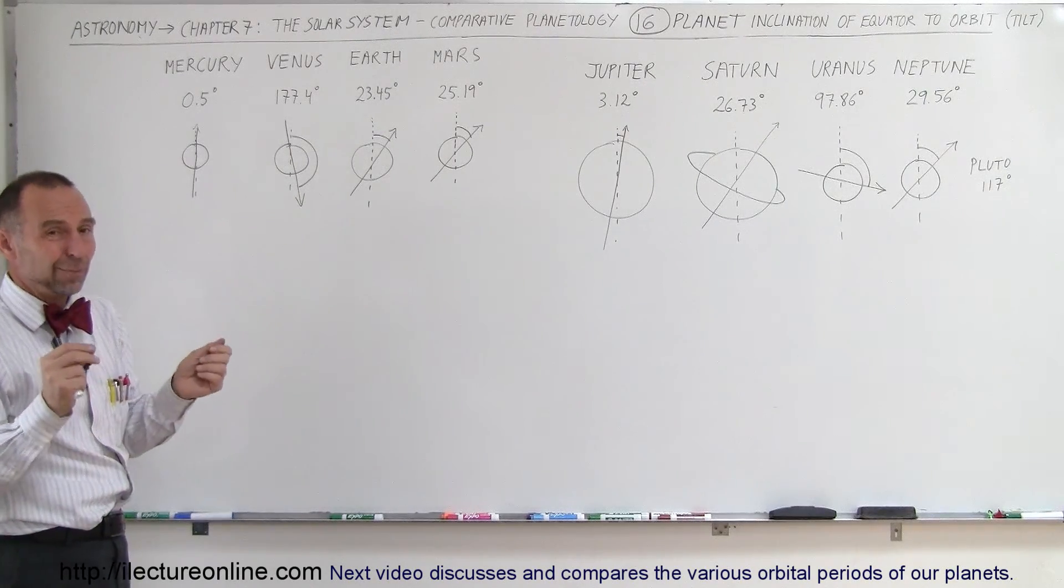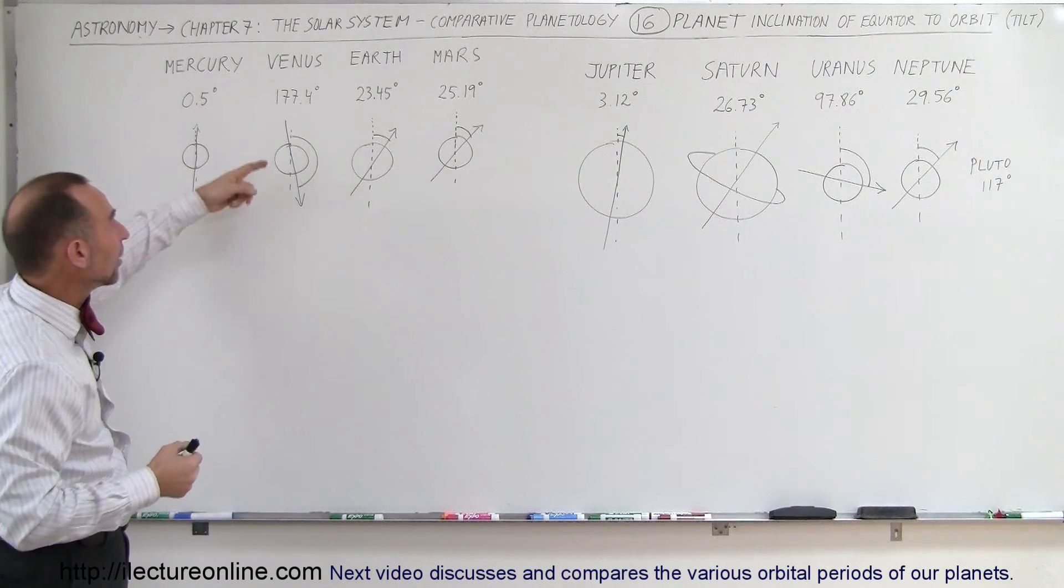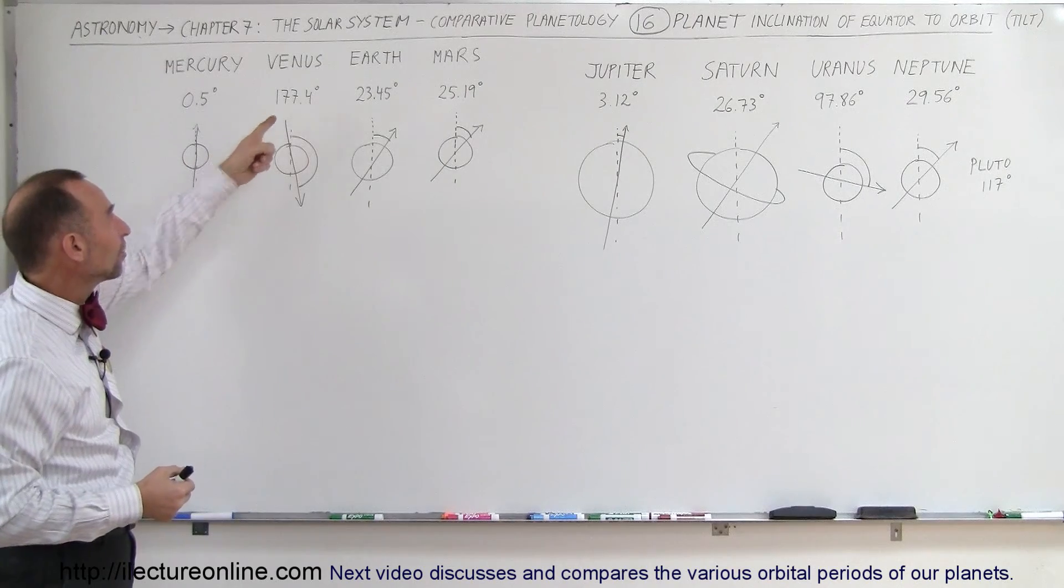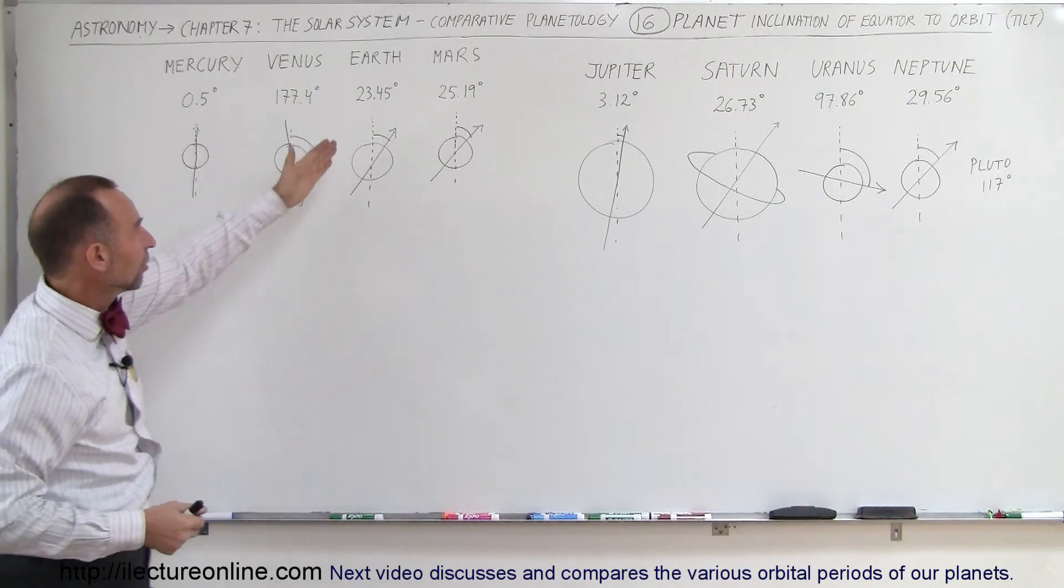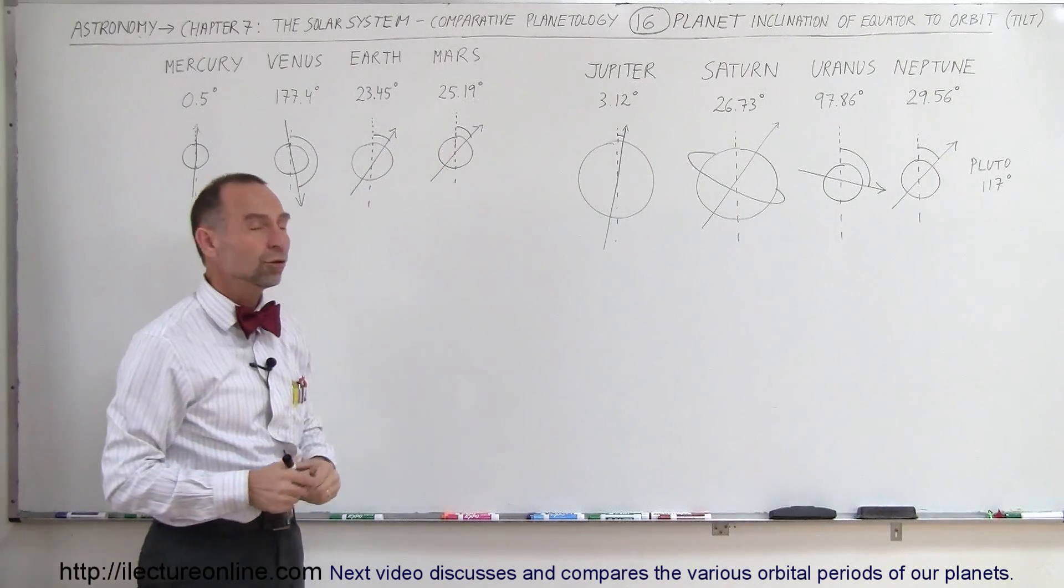Really what it is, the planet didn't slow down and stop and start turning the other direction; it simply got rotated upside down. So you can see that it's almost basically on its head. Again, the tilt of the Earth is 23.5 degrees. Mars has a tilt a little bit greater than that, about 25.2 degrees.